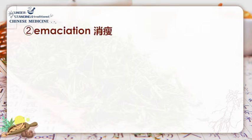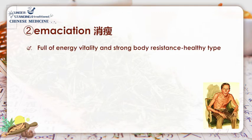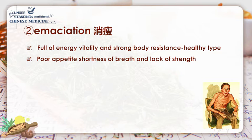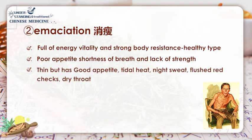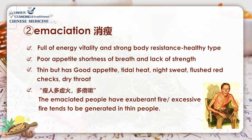In the emaciated type, if a thin person has full energy, vitality, and strong body resistance, it is a healthy situation. But a thin person with poor appetite, shortness of breath, and lack of strength indicates deficiency of qi and blood. For people with a thin build accompanied by good appetite, tidal fever, night sweating, flushed cheeks, and dry throat, it is a sign of fire deficiency due to yin deficiency. In TCM, it is also said that excessive fire tends to be generated in thin persons.